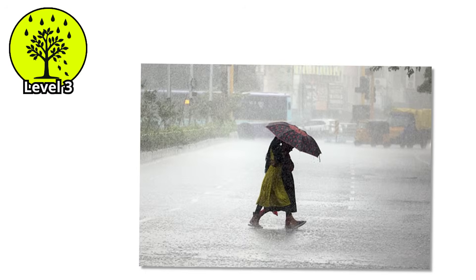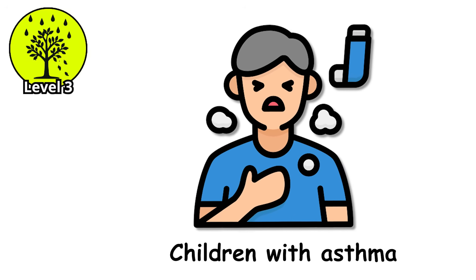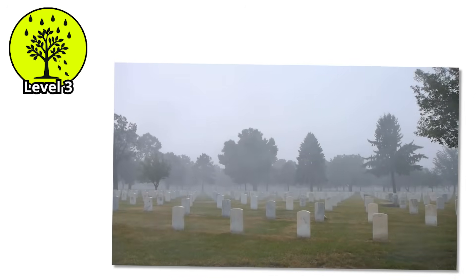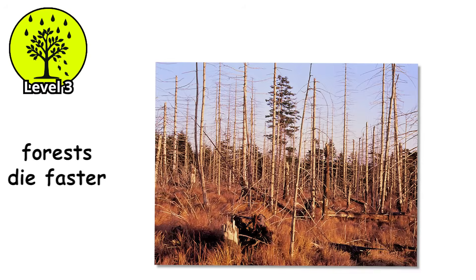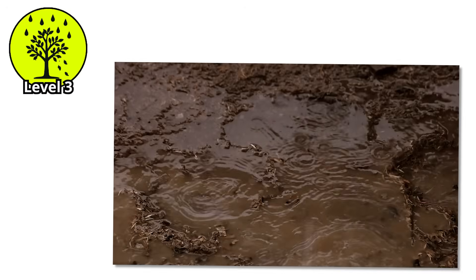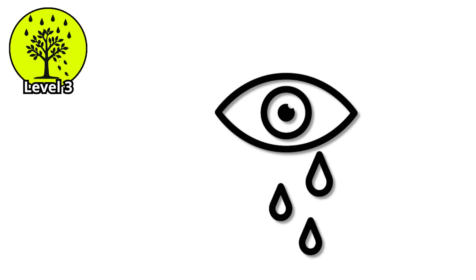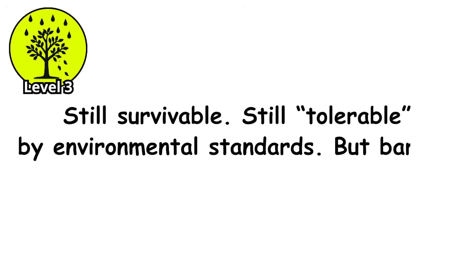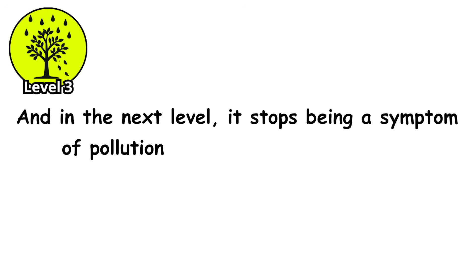People walked undercover not for rain protection, but because the air itself had turned volatile. Children with asthma experienced more frequent attacks. Elderly lungs stiffened. Chronic exposure began to eat away at mucus membranes and sinuses. This was no longer just an environmental issue — it was a public health crisis delivered by the weather. At this stage, forests die faster, crops begin to show leaf burn, and acid-sensitive amphibians disappear completely. The rain doesn't just reshape the world; it starts reshaping bodies.